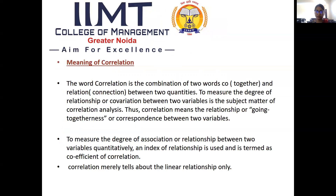Let's start the topic with the meaning of correlation. As the name suggests, correlation is a combination of two words: 'co' that means togetherness, and 'relation' that means connection or association between two variables or two quantities. Correlation analysis is the statistical tool used to find out the degree of relationship between two variables as well as the direction of the variables. For example, price and demand are inversely related — if price increases, demand decreases, and vice versa. With the help of correlation analysis, we get to know to what extent both variables are related in one numerical value, called the coefficient of correlation.